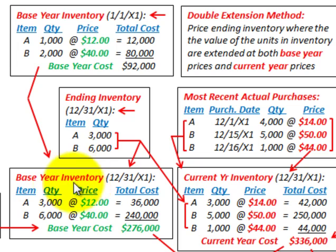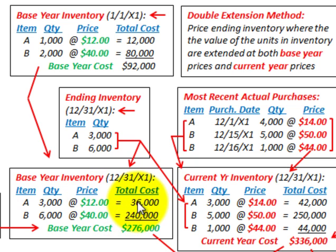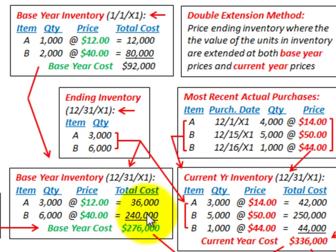Going back to determine the base year cost for our ending inventory: Item A has a quantity of 3,000 units at the base year price of $12 each, giving a total cost of $36,000. Item B has 6,000 units at the base year cost of $40 each, for a total of $240,000. So our total base year cost for ending inventory is $276,000.